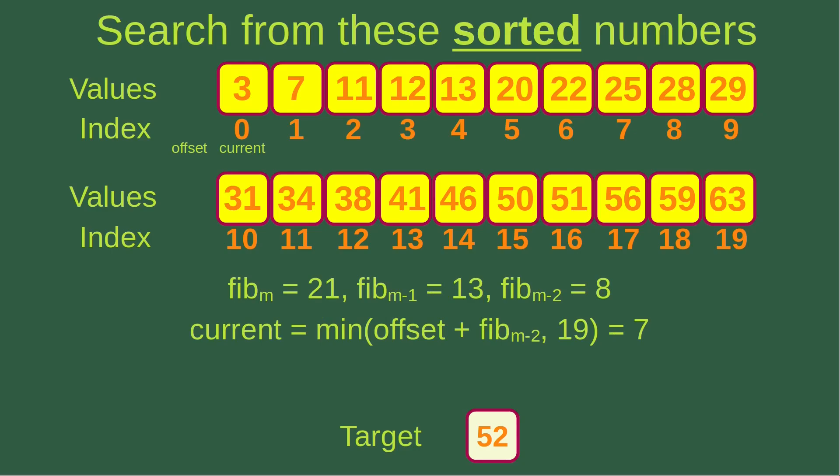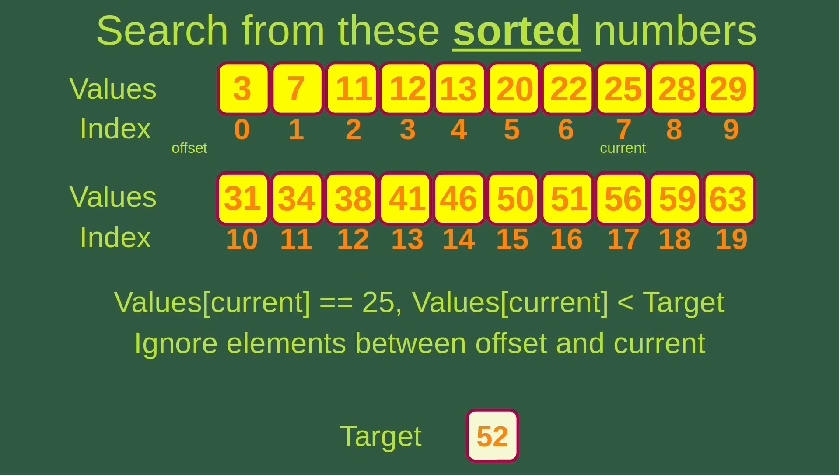Putting these Fibonacci numbers into the equation: offset is minus 1 and Fibonacci M-2 is 8, so the sum is 7. Comparing 7 to 19 gives the smaller value 7, so the current index becomes 7. The value at index 7 is 25, which is smaller than the target 52.